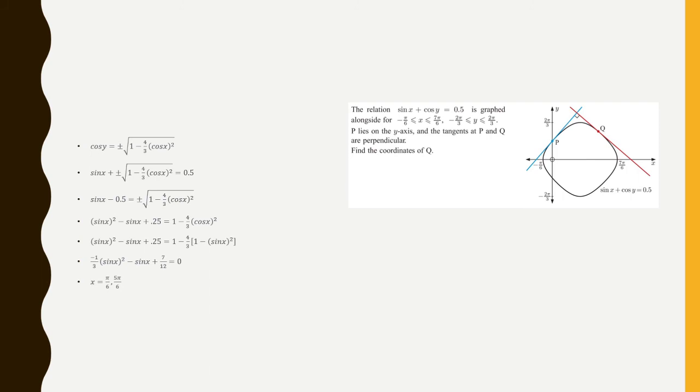So here I want to use common sense. So I'm given seven pi over six is over here. Five pi over six is very close to seven pi over six. So it'll be somewhere over here. Versus pi over six is all the way over here. So it makes sense to use five pi over six.